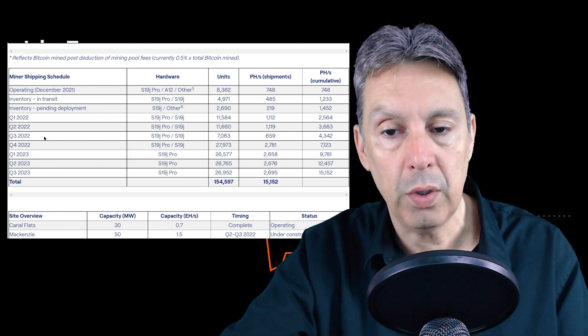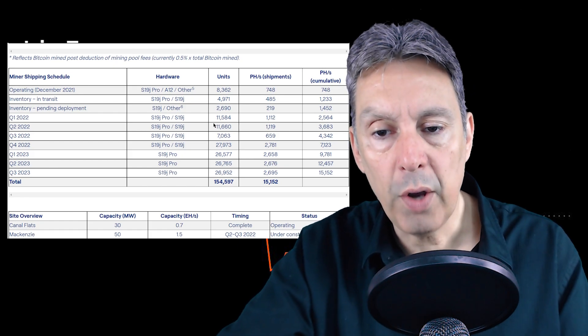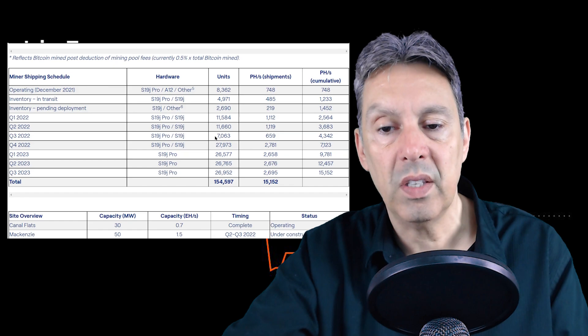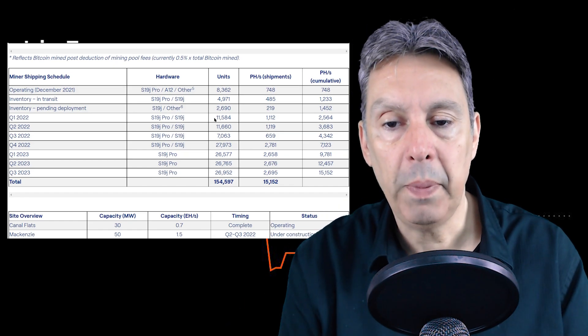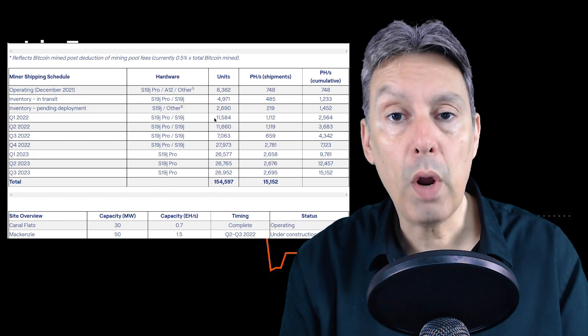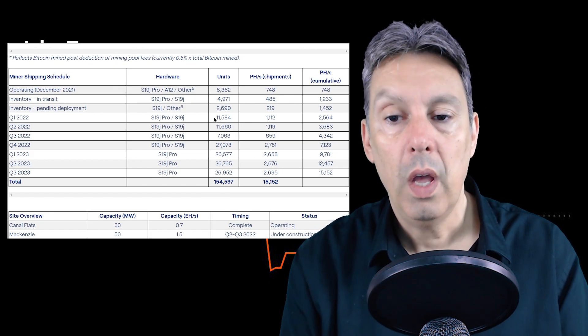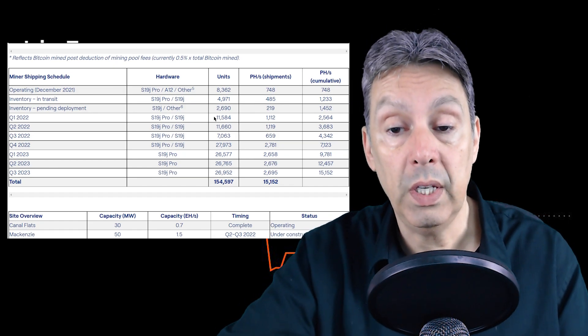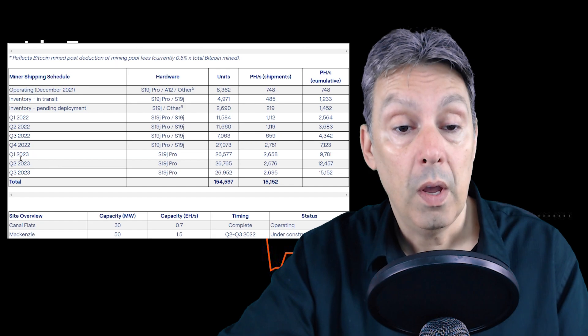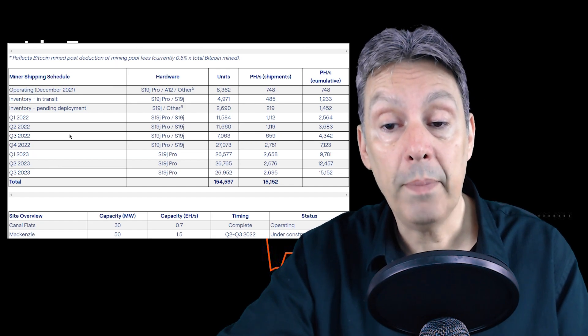Then they start going by quarter. So the first three quarters, Q1, Q2, and Q3 of 2022: 11,500, 11,600, and 7,000 machines coming respectively in those three months. This is a big undertaking. There are other companies that have similar undertakings, so I'm not saying that it can't be done, but this is aggressive.